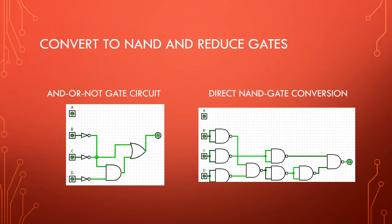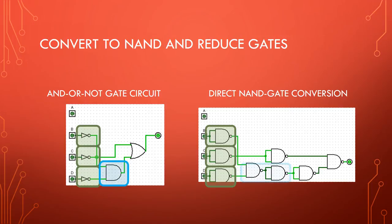Utilizing the NAND gate conversions, we can change our AND OR NOT gate circuit to a NAND gate circuit. These three NOT gates can be converted to three NAND NOT gates. The AND gate can be converted into the NAND AND gate. And the OR gate can be converted into the NAND OR gate.